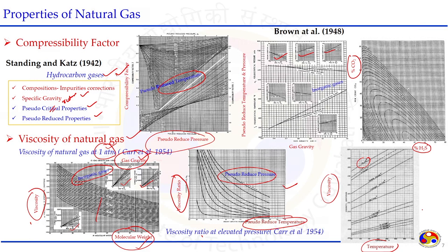Calculating gas viscosity or compressibility factor requires reading complex charts. These charts cannot be easily utilized for modeling or computer programs, so it is better to convert them into mathematical equations — which later scientists have done — to calculate the compressibility factor, viscosity, or other properties based on basic properties like pseudo-reduced temperature, pseudo-reduced pressure, gas gravity, and molecular weight.